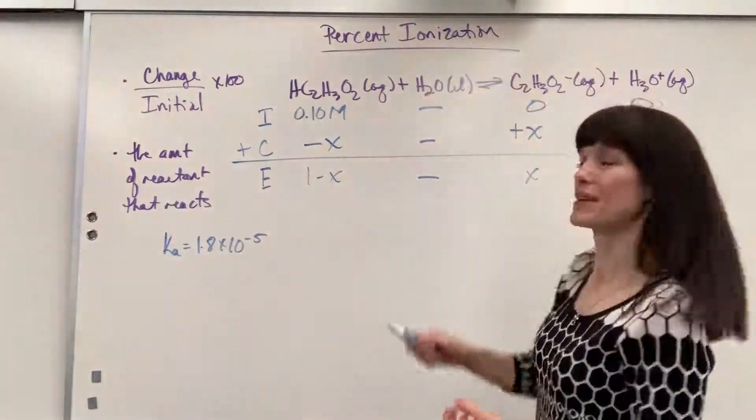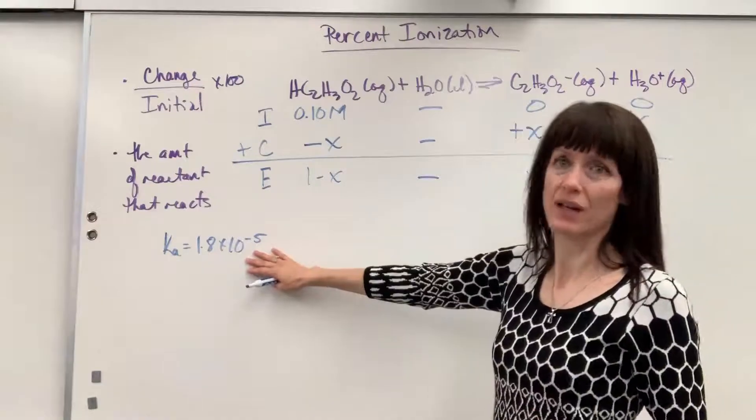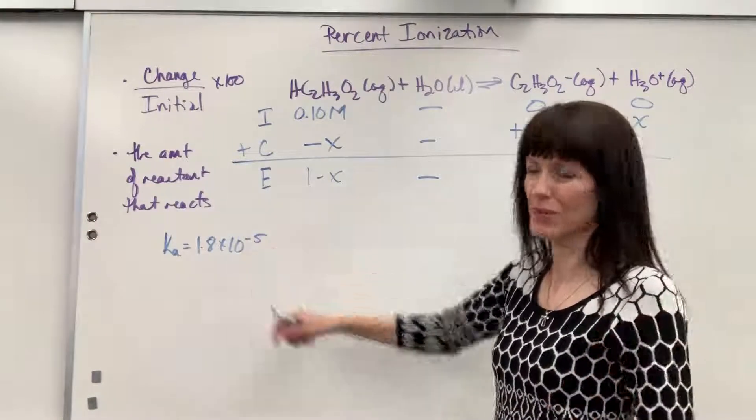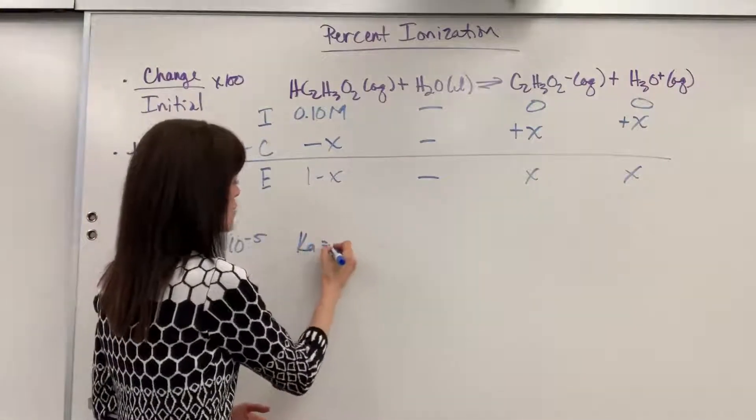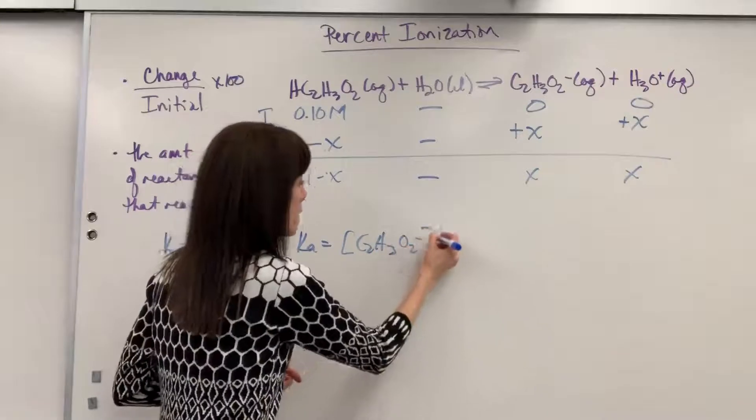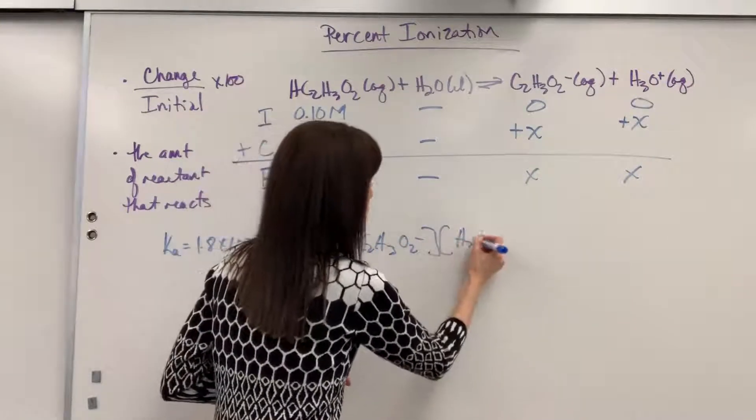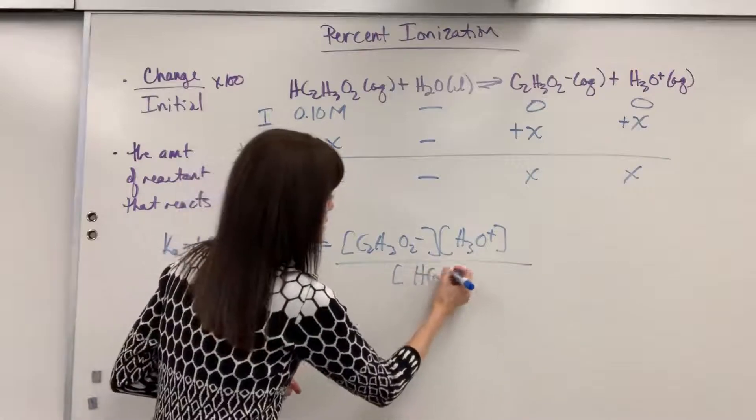So let's go ahead and figure out our x. Here is our ionization constant for acetic acid, so equilibrium constant. Let's go ahead and write the equilibrium expression. Ka will equal products. That will be our acetate ion times the hydronium ion divided by reactants, which is the acetic acid.